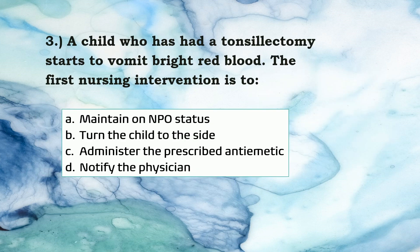Question number 3. A child who has had a tonsillectomy starts to vomit bright red blood. After tonsillectomy, if bleeding occurs, the nurse immediately turns the child to the side to prevent aspiration and then notifies the physician. NPO status will be maintained and an anti-emetic may be prescribed. However, the initial nursing action will be to turn the child to the side. Therefore, the correct answer is B.